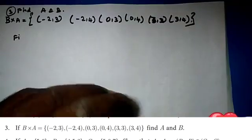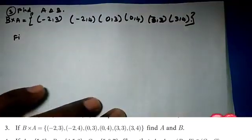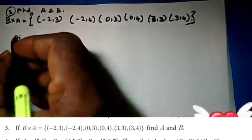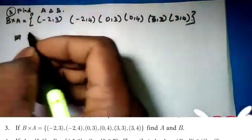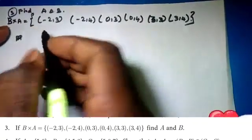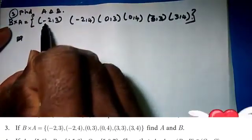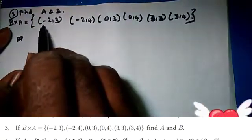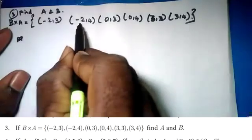We will see the sum of a value and b value. It is very easy. First, we will see the values. B values: minus 2.